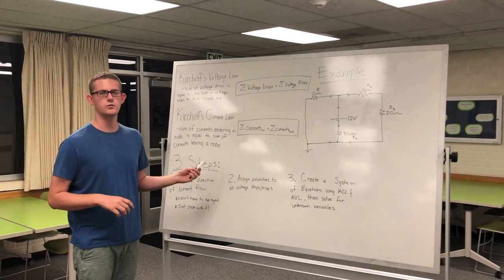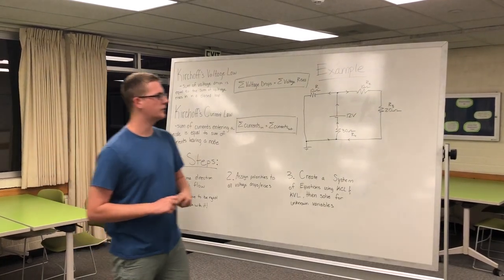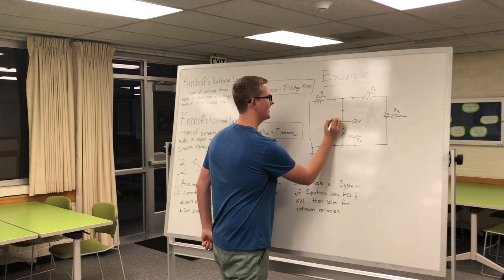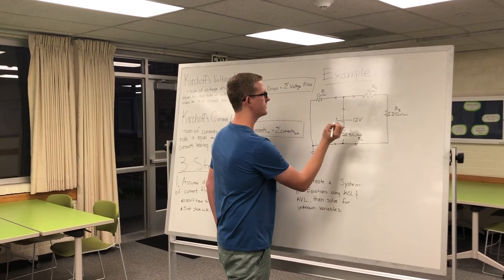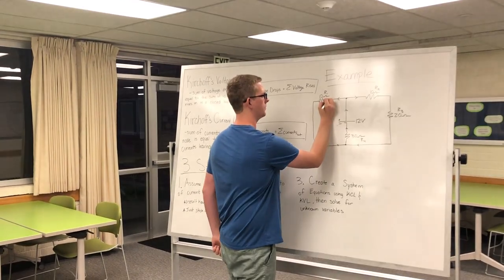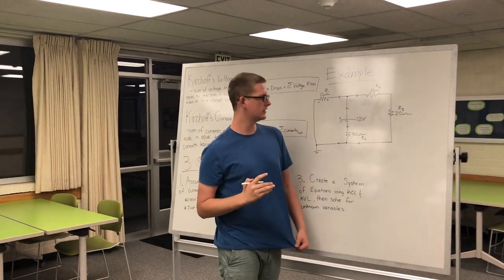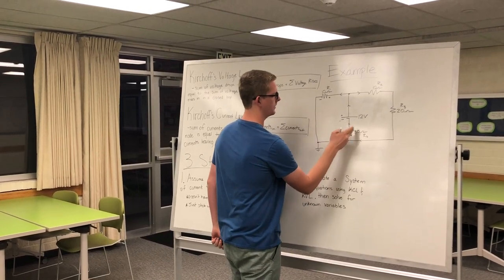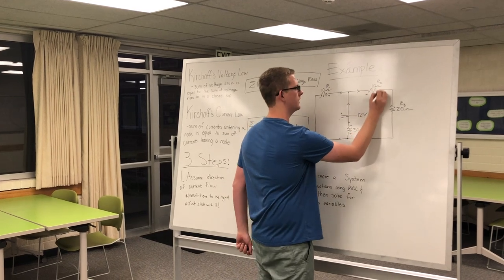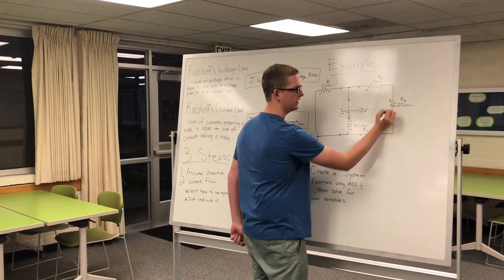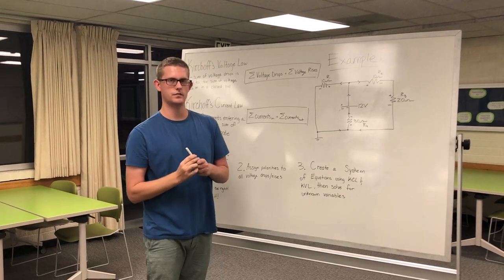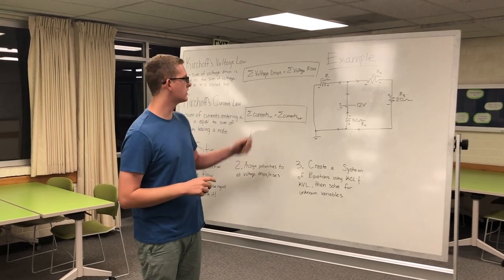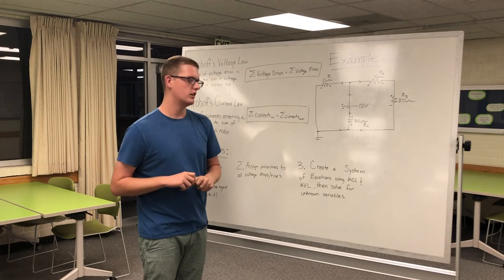Step two: we're going to assign polarities to all the voltage drops and rises. Starting at the bottom of the voltage source with a negative, going up to a positive, then starting with this resistor going from positive to negative — because resistors drop voltage, not rise. Continuing: voltage drop, positive and negative; voltage drop, positive and negative; and voltage drop, positive and negative. With this drawn circuit diagram, we can create a system of equations using Kirchhoff's voltage and current laws to solve for the unknown currents.